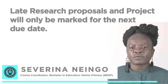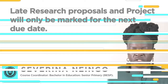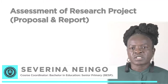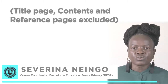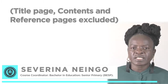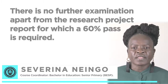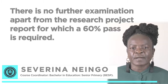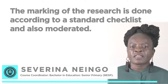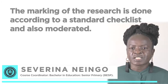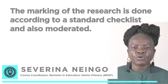Late research proposals and projects will only be marked for the next due date. The assignment is in the form of a research proposal of about 15 pages, excluding the title page, the contents page, and the reference pages. There is no further examination apart from the research project report, for which a 60% pass is required. Students who do not achieve the required 60% must resubmit their research project. The marking of research is done according to a standard checklist and is also moderated.